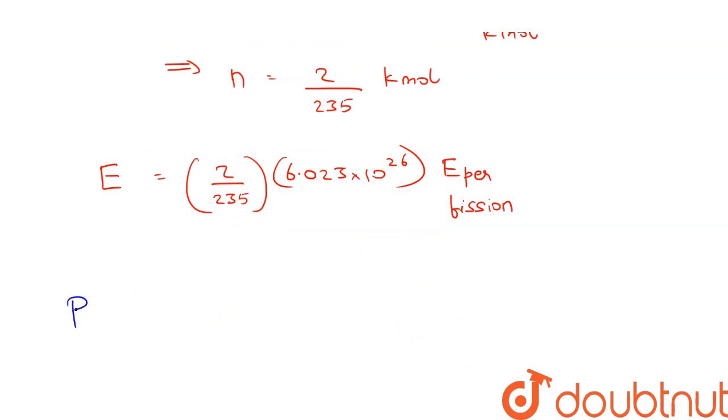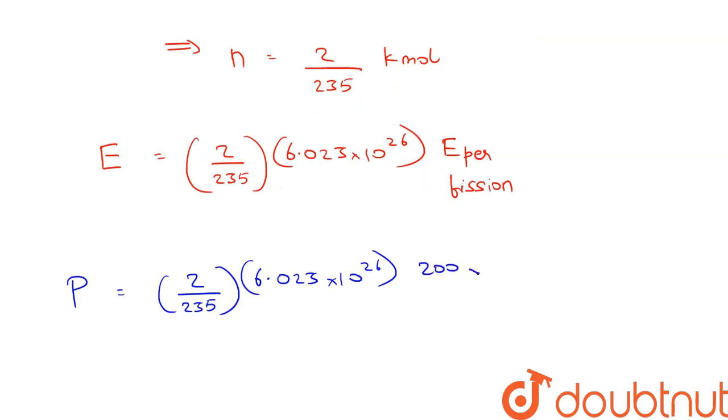Multiplied by the energy per fission, so the power P would be equal to 2 upon 235 into 6.023 into 10 to the power 26.